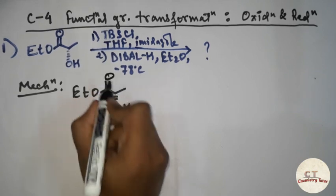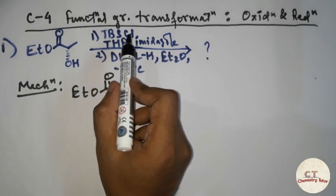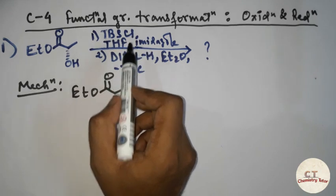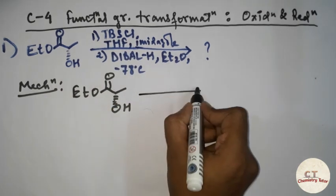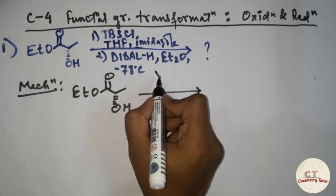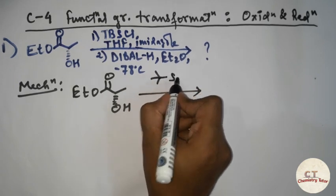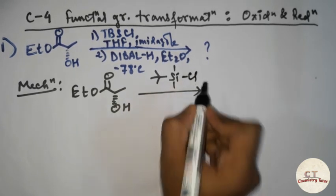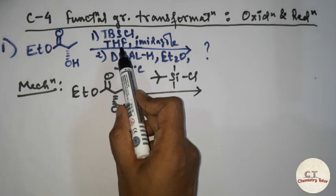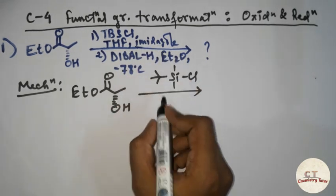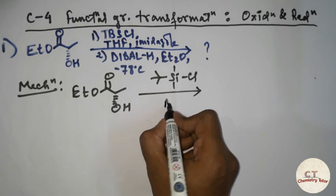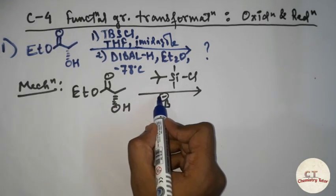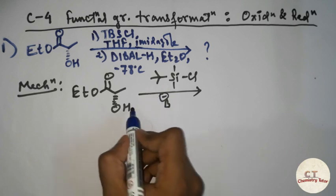Firstly, TBSCL — what is TBSCL? It is tert-butyl dimethylsilyl chloride. I will draw the structure of this: silyl dimethyl chloride. And tetrahydrofuran and imidazole — what is imidazole? It acts as a base. Here it acts as a base.